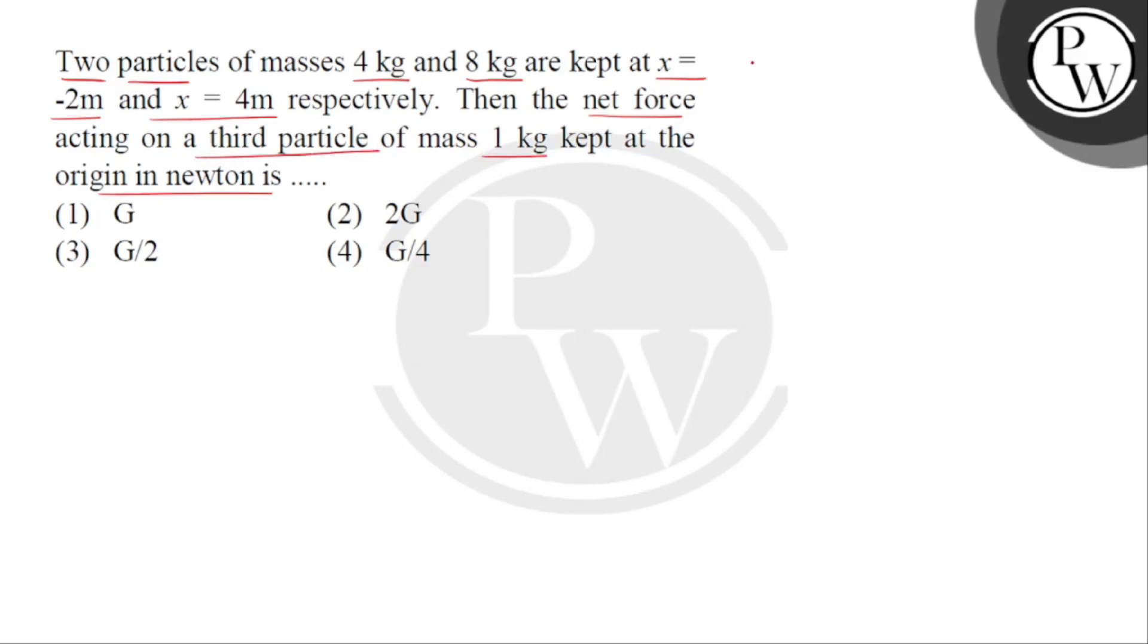Given we have two particles. Mass of first particle M1 is 4 kg and that of second particle M2 is 8 kg. Now, let's see the location. This is the positive direction of x-axis and this will be the negative direction of x-axis and let point O be the origin.